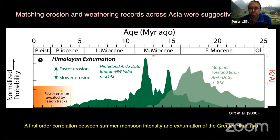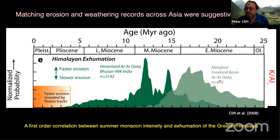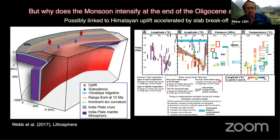This begs the question: why does the monsoon become stronger at the beginning of the Early Miocene? The India-Asia collision is controversial but most people think it happens sometime in the Eocene, perhaps 50 or 60 million years ago. So why does it take 25 million years for the monsoon to start being strong? Records from people like Alexis Licht suggest the monsoon was active early on, but most agree things get stronger in the Miocene. One possibility: the steady growth of the Tibetan Plateau was reaching a critical threshold.